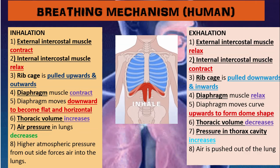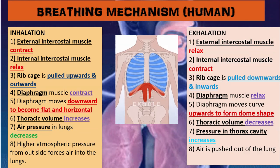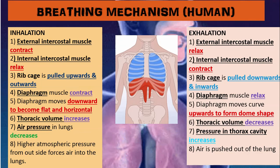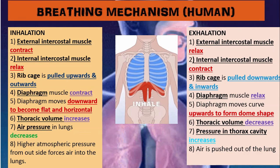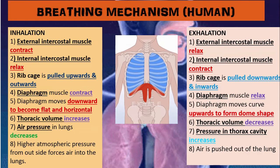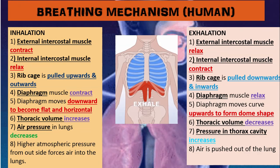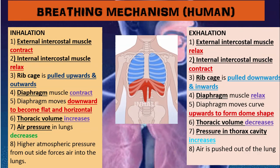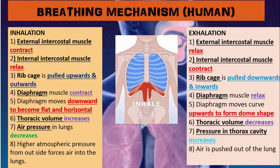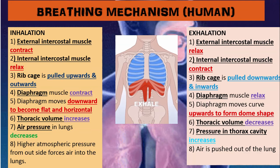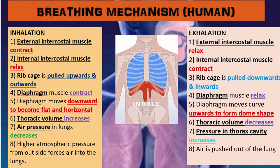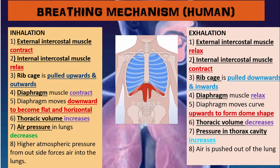For the exhalation process: the external intercostal muscle relaxes and the internal intercostal muscle contracts. The rib cage is pulled downward and inward. The diaphragm muscle relaxes and moves upward to form a dome shape. Thoracic volume decreases, pressure in the thoracic cavity increases, and the air is pushed out of the lungs.